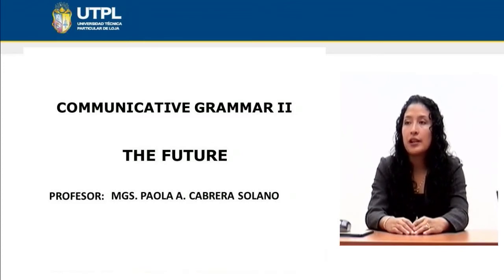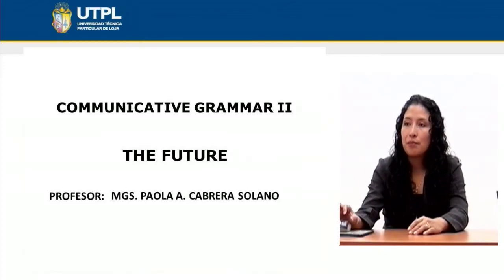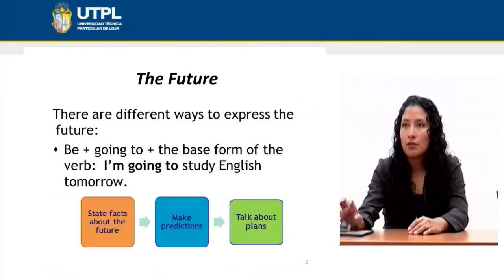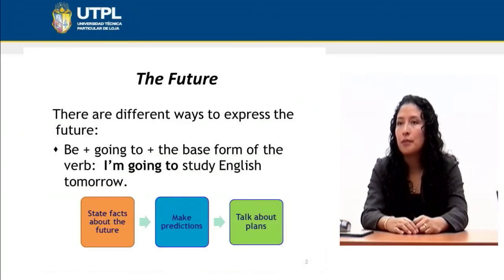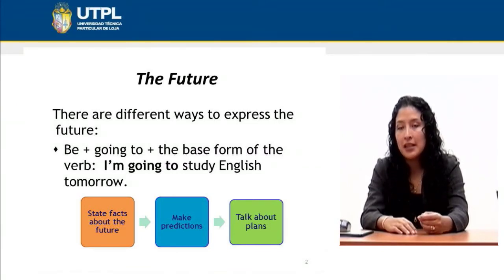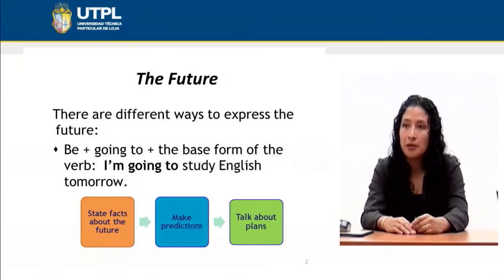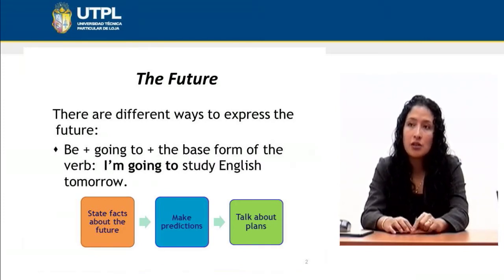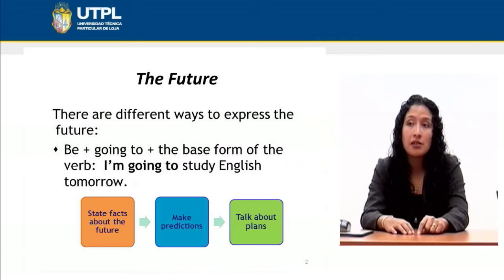Hello students. Today we are analyzing the future tense through the following presentation. I hope this is clear for you. There are different ways to express the future tense in English — for example, with 'be' plus 'going to' plus the base form of the verb. We can also use 'be' and its forms: am, is, or are.